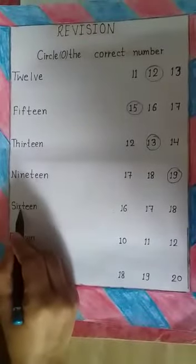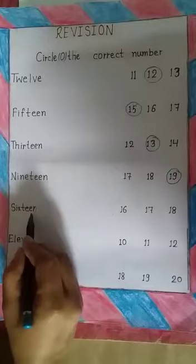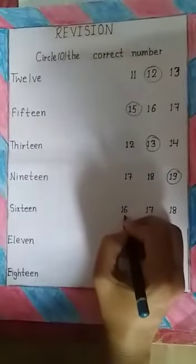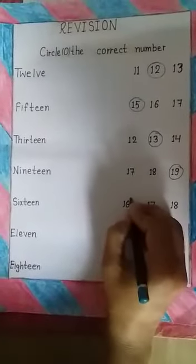S, I, X, T, E, E, N — sixteen. 16. So circle 16.